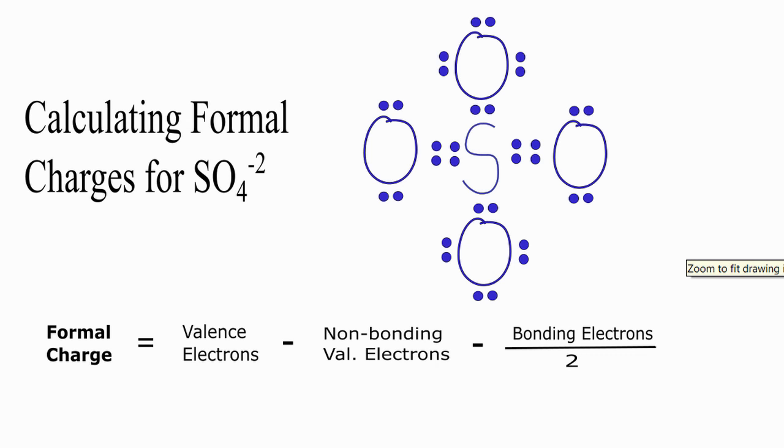Here we have the SO4 2- ion, the sulfate ion, and we're going to calculate the formal charges for each atom. So let's start with this oxygen right here.